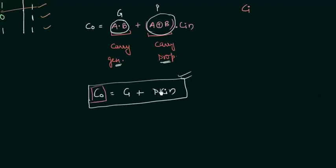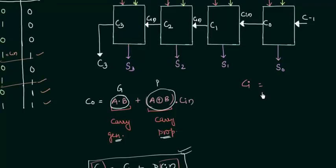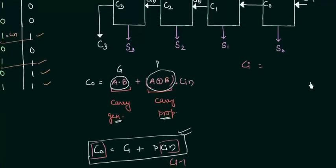And Cin will be what? Ci minus 1. So all we are doing here is the generalization of this equation. So Ci and we are having G or P Ci minus 1. We have generalized this equation.